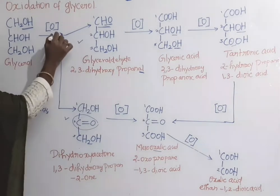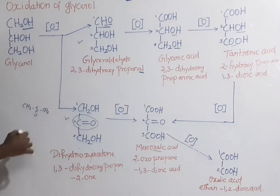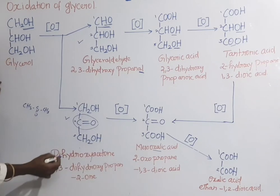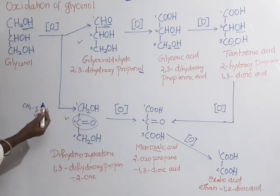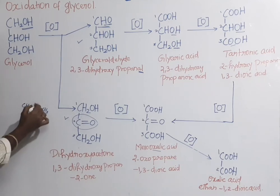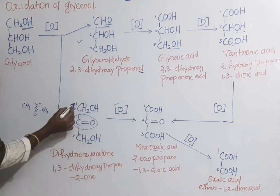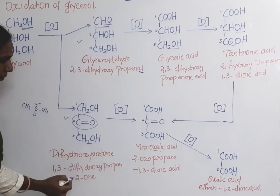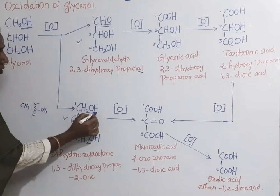Glycerol also oxidizes to give another product: dihydroxyacetone. The formula for acetone is CH3-CO-CH3. Here we get dihydroxyacetone, also named 1,3-dihydroxypropan-2-one — in the first carbon atom there is one hydroxy group.